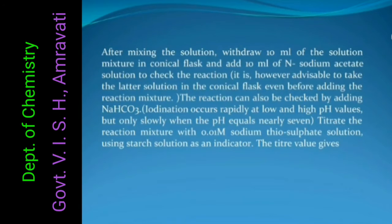After mixing the solution, withdraw 10 ml of the solution mixture in a conical flask and add 10 ml of N-sodium acetate solution to check the reaction. It is, however, advisable to take the latter solution in the conical flask even before adding the reaction mixture. The reaction can also be checked by adding NaHCO3. Iodination occurs rapidly at low and high pH values, but only slowly when the pH equals nearly 7.